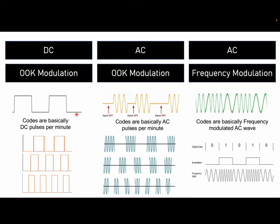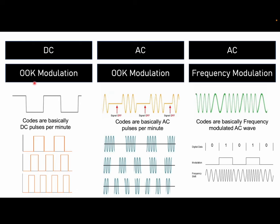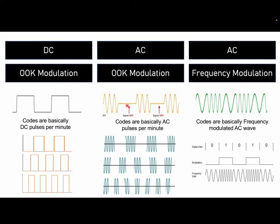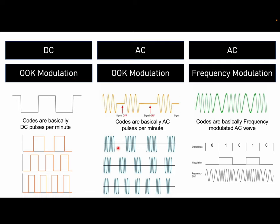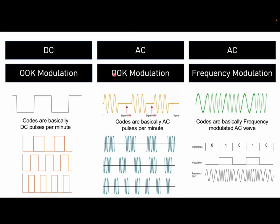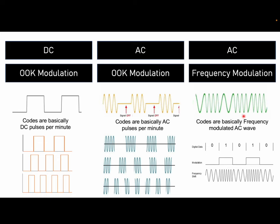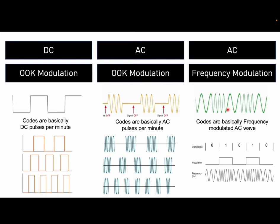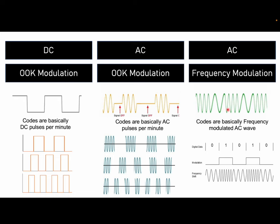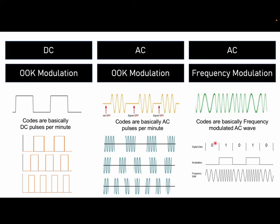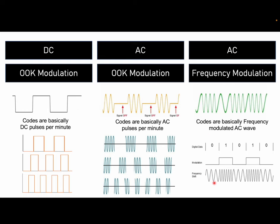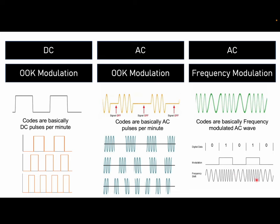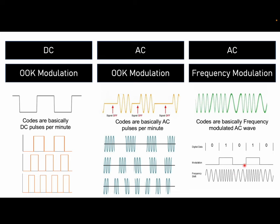One coded track circuit uses DC pulses, and the modulation is called OOK — on-off keying modulation. Or you could have on-off AC pulses, where the AC pulses are on and then off. The third type, which is more complicated, is frequency modulation, also called FSK — frequency shift keying. The way it works is that if you want to transmit a zero bit you use one frequency, and if you want to transmit a one bit you use a different frequency, so different frequencies transmit information to the train.